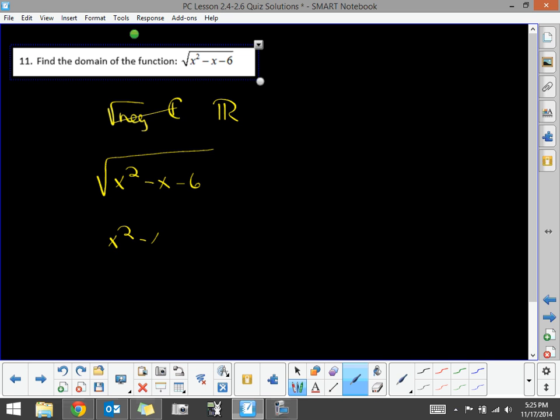So we want x squared minus x minus 6 to be greater than or equal to 0. It can equal 0, but it just can't be less than.